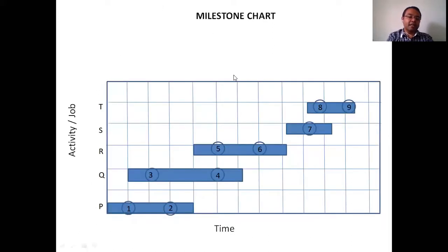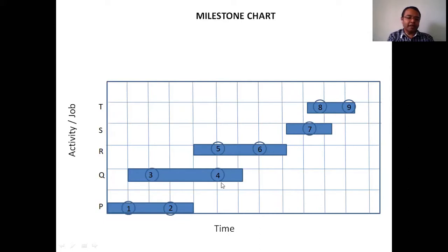In the milestone chart also, we can't fully show the dependency. For example, for Q activity I divide into two milestones: three and four. For R activity I divide into two milestones: five and six. Four and five milestones are shown happening at the same time.